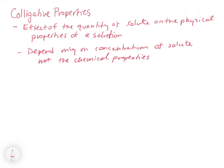In this video, we're going to talk about colligative properties. Colligative properties are the effect of the quantity of solute on the physical properties of a solution. We're talking about things like vapor pressure, boiling point, freezing point, and osmotic pressure. These are all physical properties of a solution that can be affected by a solute, and we discover that these properties depend only on the concentration of the solute, not on the chemical properties. These physical properties will vary linearly as a function of the amount of solute added.